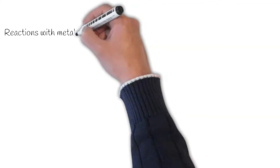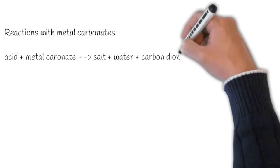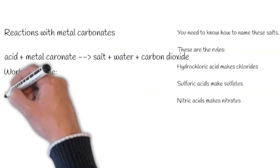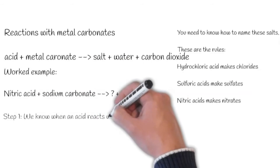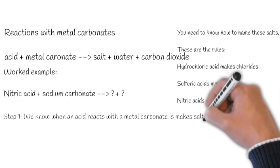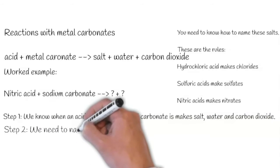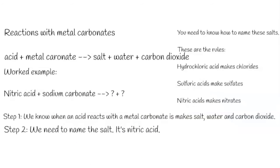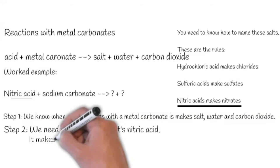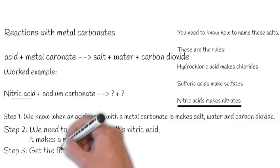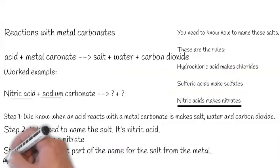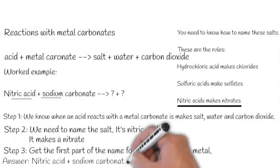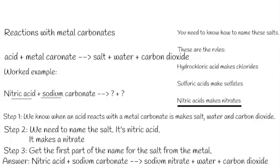We also need to know how acids react with metal carbonates. An acid plus metal carbonate makes salt plus water plus carbon dioxide. Let's go through an example. Nitric acid plus sodium carbonate makes what? We know that when an acid reacts with a metal carbonate, it makes a salt plus water plus carbon dioxide. We need to name this salt — we're using nitric acid, and therefore it's going to make a nitrate. We need to get the first part of the name for this nitrate from the metal, which is sodium carbonate. So the answer is nitric acid plus sodium carbonate makes sodium nitrate plus water plus carbon dioxide.